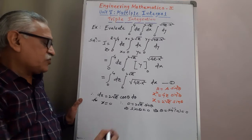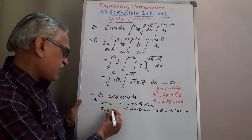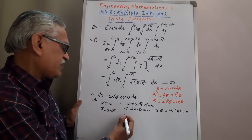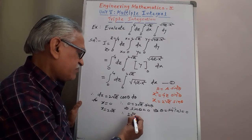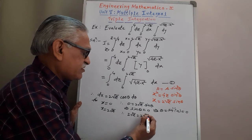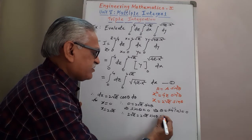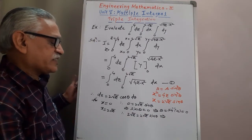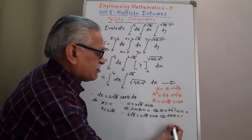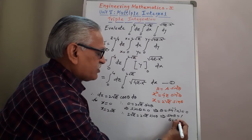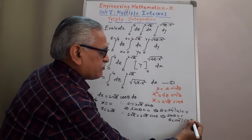When X equals 2 root Z (the upper limit), we get 2 root Z equals 2 root Z sin theta. The 2 root Z cancels, giving sin theta equals 1. Therefore theta equals sin inverse of 1, and sin inverse of 1 is pi by 2. So the upper limit is theta equals pi by 2.